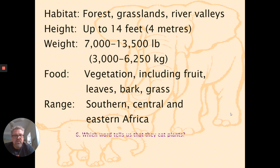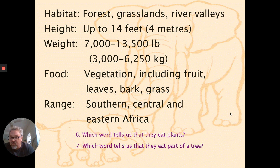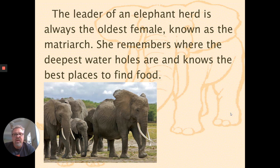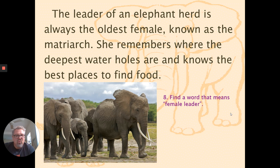Here are some questions. Which word tells us that they eat plants? Can you find a word that refers to plants or plant matter — it's in the food section. Which word tells us that they eat part of a tree? 'The leader of an elephant herd is always the oldest female, known as the matriarch. She remembers where the deepest water holes are and knows the best places to find food.' Find a word that means female leader — matriarch.